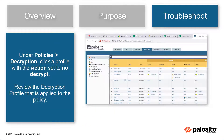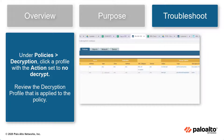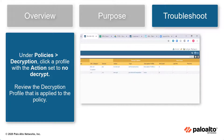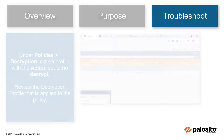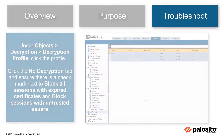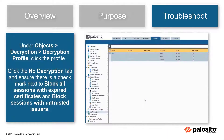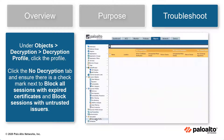Under Policies > Decryption, click a profile with the action set to No Decrypt. Then under Objects > Decryption > Decryption Profile, click a profile to edit.